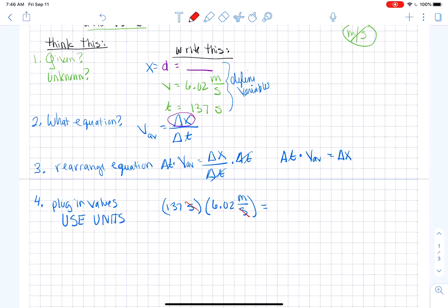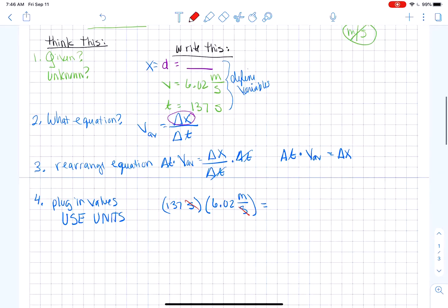Then, now that you've done this, you can do the math. And the math is going to look like 137 times 6.02, which is going to give you 824.74 meters.